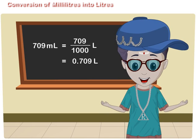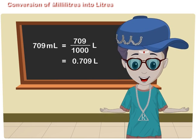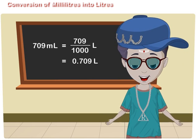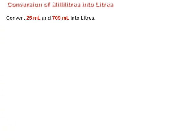Conversion of milliliters into litres. Let us understand it by converting 25 milliliters and 709 milliliters into litres.